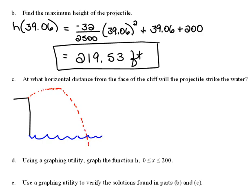So if we're looking at what horizontal distance from the face of the cliff will the projectile strike the water, we're looking at this point right here, where this thing falls into the water. Well, keep in mind that we're going to be looking at this as an x and a y-axis system. So really, we're trying to find where this thing hits the x-axis, or another way of saying it would be the x-intercept.